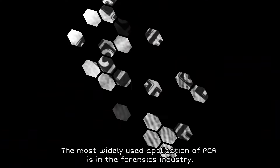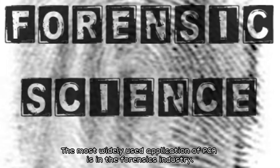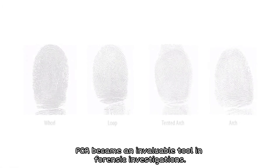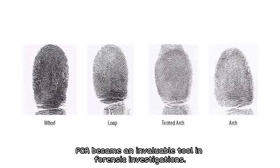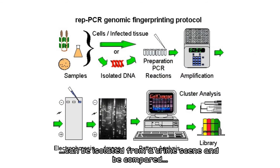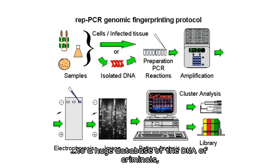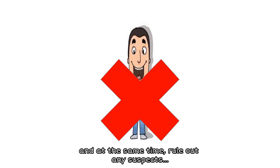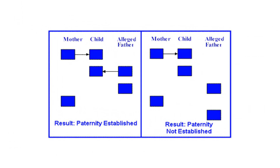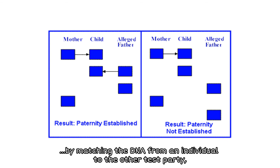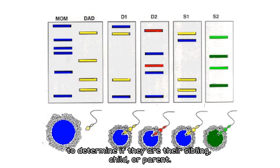The most widely used application of PCR is in the forensics industry. Because of PCR-based DNA fingerprinting being available, PCR became an invaluable tool in forensic investigations. DNA fingerprinting can be very useful as tiny fragments of DNA can be isolated from a crime scene and compared to a huge database of criminals' DNA, ruling out suspects whose DNA does not match. Paternity testing is also made possible through PCR by matching the DNA from an individual to the other test party to determine if they are a sibling, child, or parent.